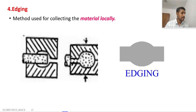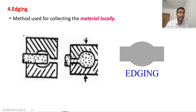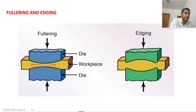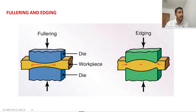The next process is the edging operation, which is similar to the fullering process. But in edging, material is collected locally anywhere in the workpiece — not strictly at the ends. In fullering, material flows from the centre outward. In edging, material flows from the outer region back to the centre region. Locally we collect the material in edging and distribute material from a particular location outward using fullering.